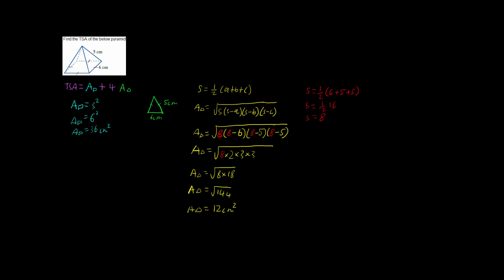Now we can go back to our total surface area of the pyramid. The total surface area is 36 centimeters squared for the base, plus 4 lots of the triangle area, which we found to be 12 centimeters squared. So we have 36 plus 4 times 12, which is 36 plus 48, giving us a total surface area of 84 centimeters squared.